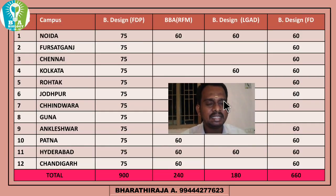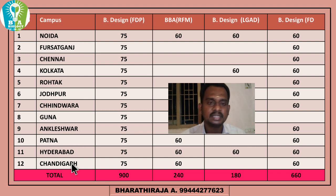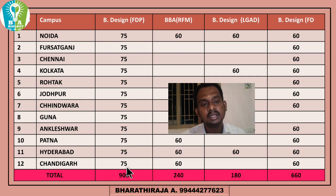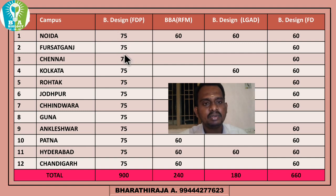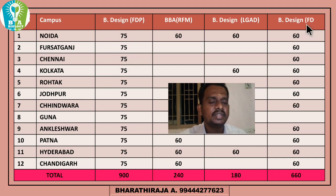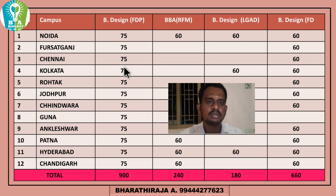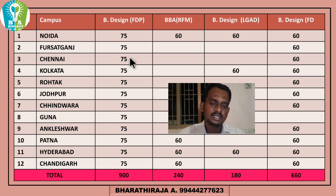There are 18 campuses in total. For Bachelor of Designing in Footwear Designing, there are 900 seats total. The Chennai campus has 75 seats for Bachelor of Designing in Footwear Designing and 60 seats for Fashion Designing — totaling 135 seats at the Chennai campus.